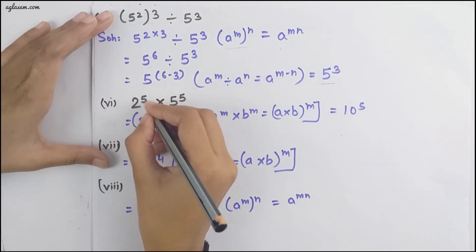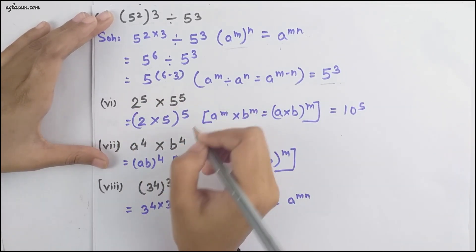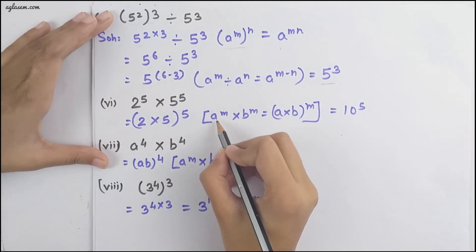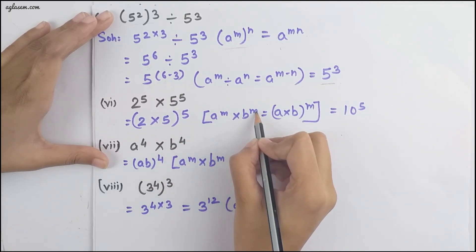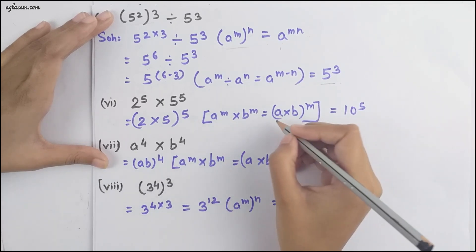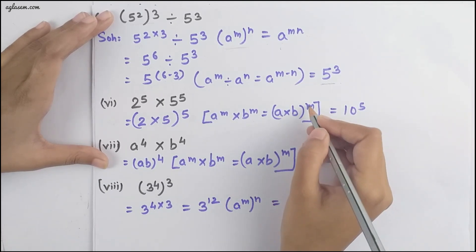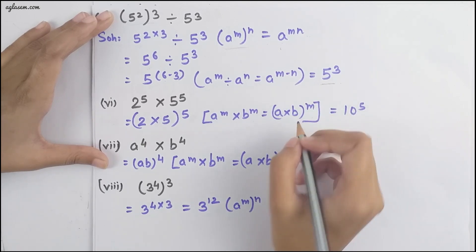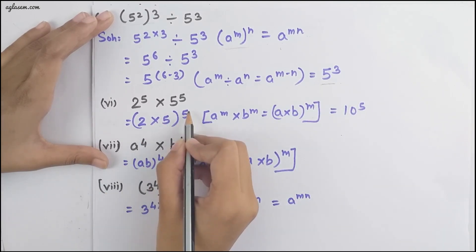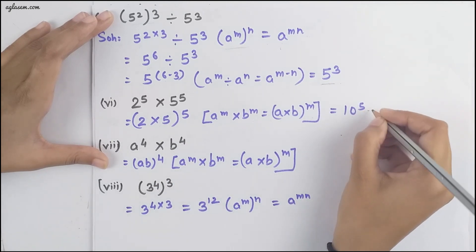Moving to the next part, we have 2 raised to the power 5 into 5 raised to the power 5. When the powers are the same but the bases are different, we use the formula a^m × b^m = (a×b)^m. So from there we get (2×5)^5 = 10 raised to the power 5.